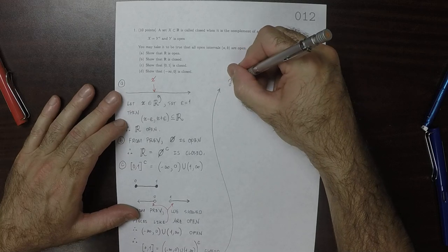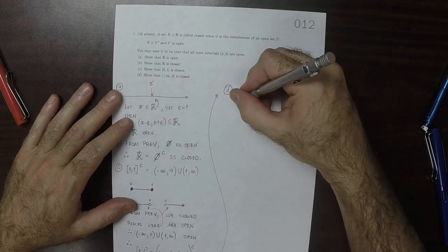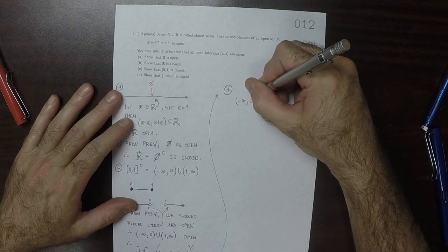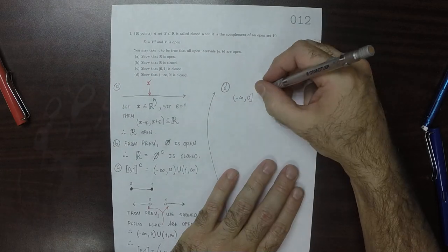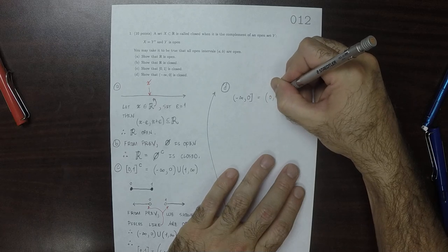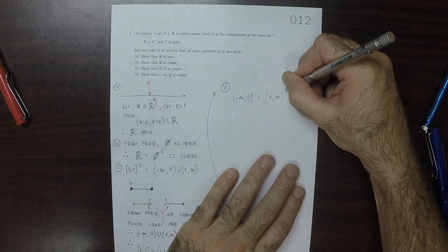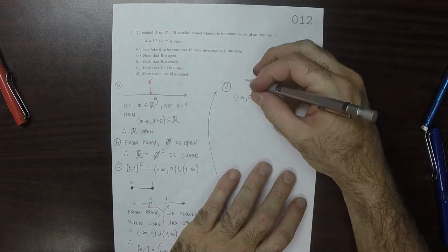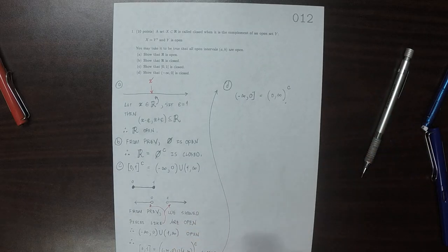And then D. Well, this one is easy. Negative infinity to 0. So, that's 0 to infinity, complement, and that's open. And, therefore, the complement is closed. And that's it.